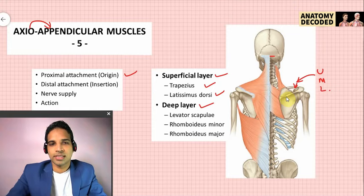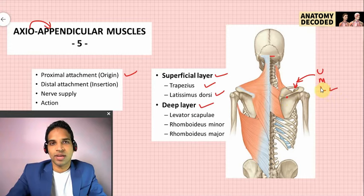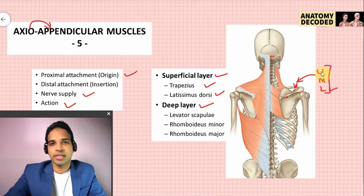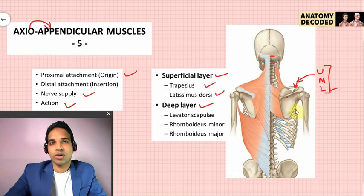The lower fibers of trapezius attach along the lower lip of the spine of the scapula at a small elevation called the deltoid tubercle. Nerve supply of trapezius is the spinal part of the accessory nerve. Actions: upper fibers act with levator scapulae to elevate the scapula; middle fibers act with rhomboids to retract the scapula; lower fibers act with serratus anterior to help in overhead abduction of the shoulder joint.